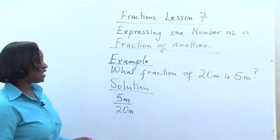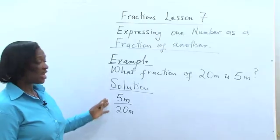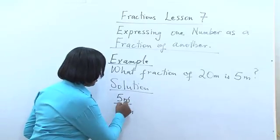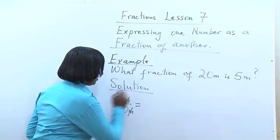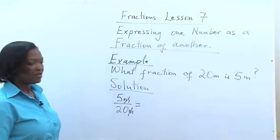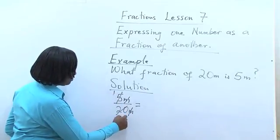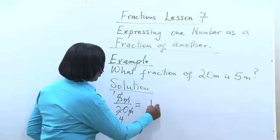The meters we cancel out because we don't need the units. The units are the same, so we can actually compare. How many 5s do you have in 20? 5 in 5 would give you 1 and 5 in 20 would give you 4. So it's 1 quarter.